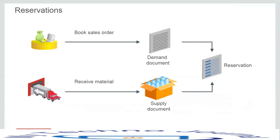A reservation creates a permanent data link between a supply document and a demand document, and represents a guaranteed allotment of material to a specific demand. Item reservations prevent picking material set aside for a specific sales order, account alias, or user-defined demand. We can also create reservations for different types of supplies such as on-hand inventory or purchase orders.